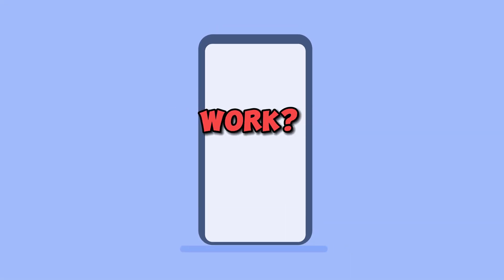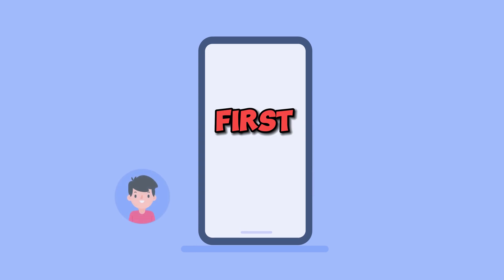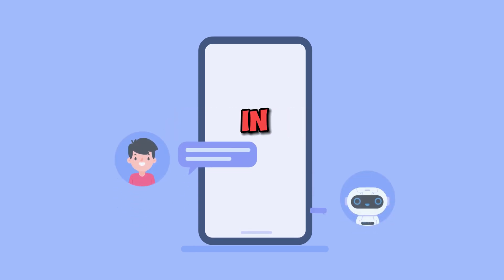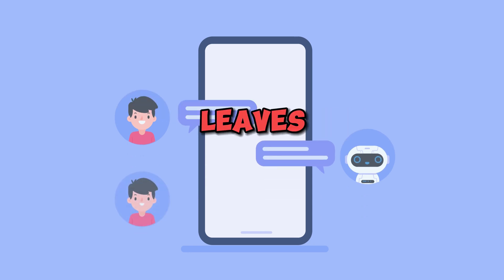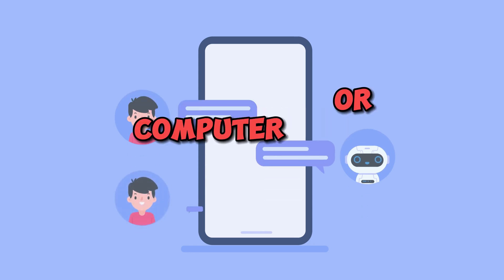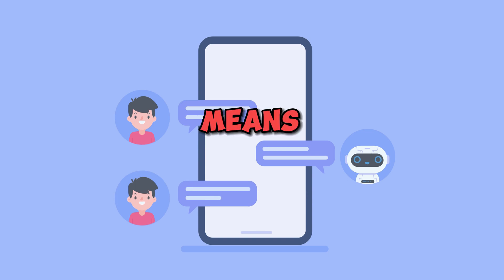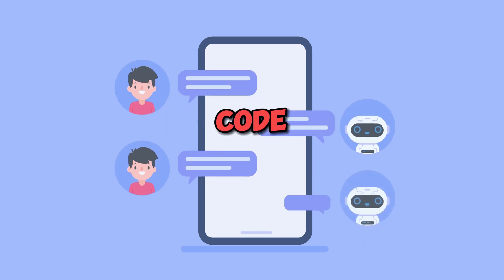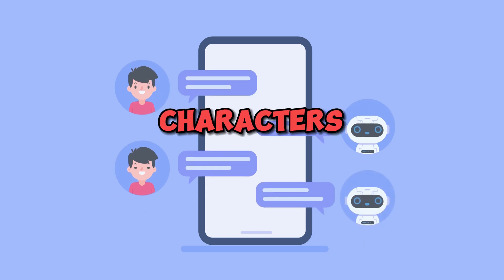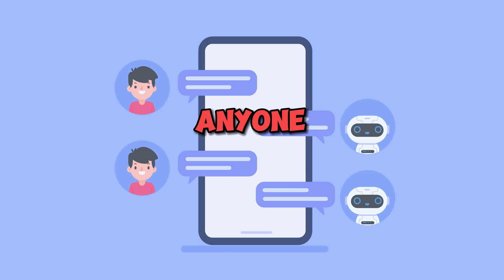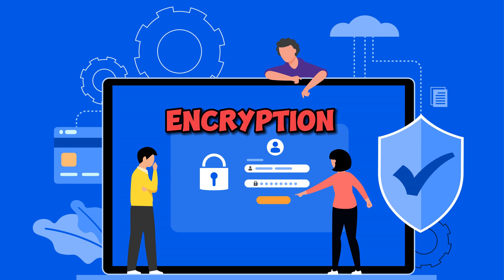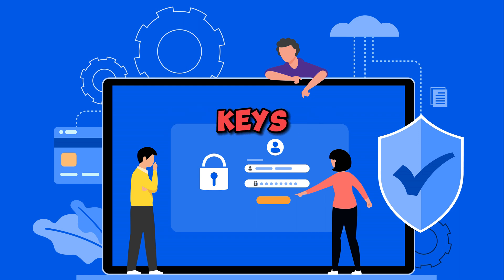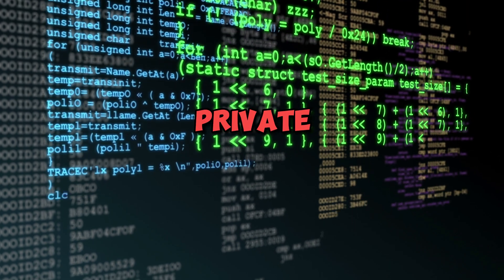How does end-to-end encryption work? First, the messaging app locks the message. When you send a message in an end-to-end encryption chat, your device automatically encrypts it before it leaves your phone or computer. This means it's transformed into a scrambled code that appears as a jumble of characters, making it impossible for anyone except the intended recipient to decipher. The encryption process uses a unique pair of keys: a public key and a private key.